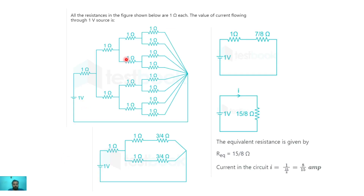Next question: all the resistors in the figure below are 1 ohm each. Find the value of current flowing through the 1 volt source. In this circuit, this 1 ohm and this 1 ohm are in parallel, again this 1 ohm and this 1 ohm are in parallel, and similarly other pairs are also in parallel.